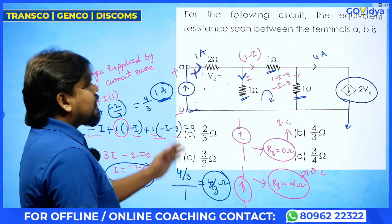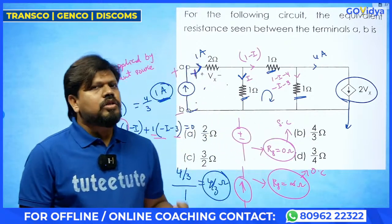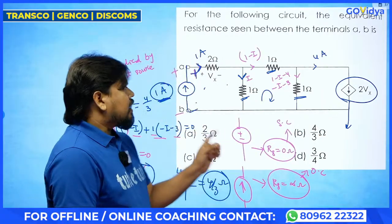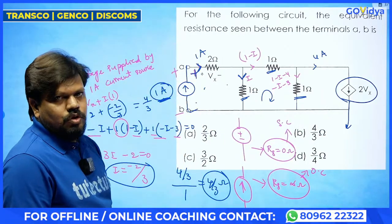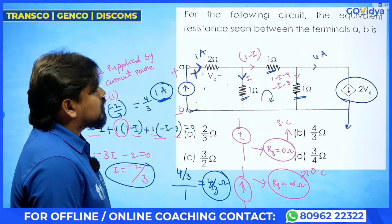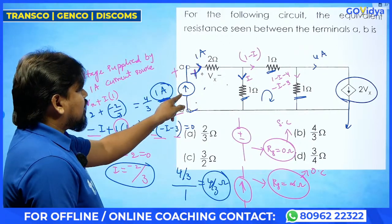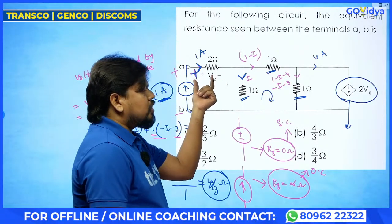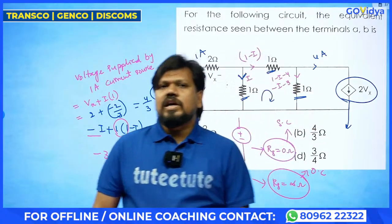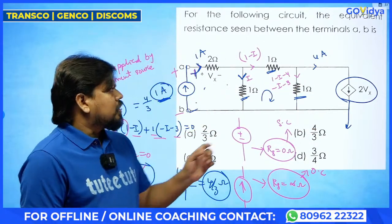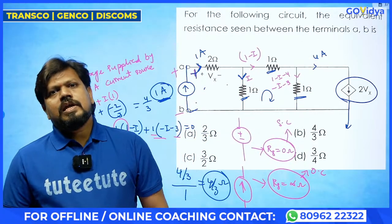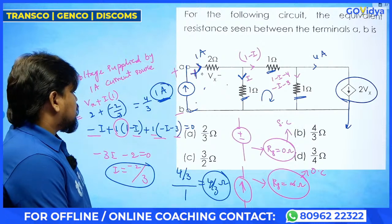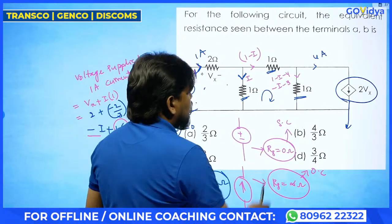Whenever there is no source in the network, you cannot find out the equivalent resistance with a dependent source. So that's why what we are doing — we are connecting one external voltage source or external current source. We can select the voltage source also, there is no issue. But whenever you select a current source, directly we are getting some voltage here, so the dependent source value is directly converted into a proper numerical value. That's why we have used this current source. So this is how we need to solve. The option for this one is 4 by 3 — option B.